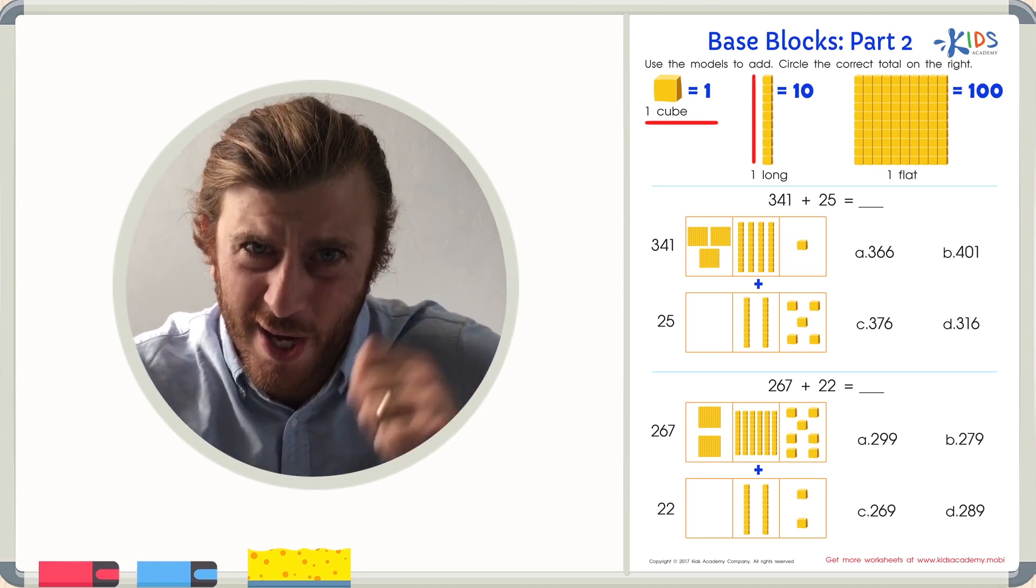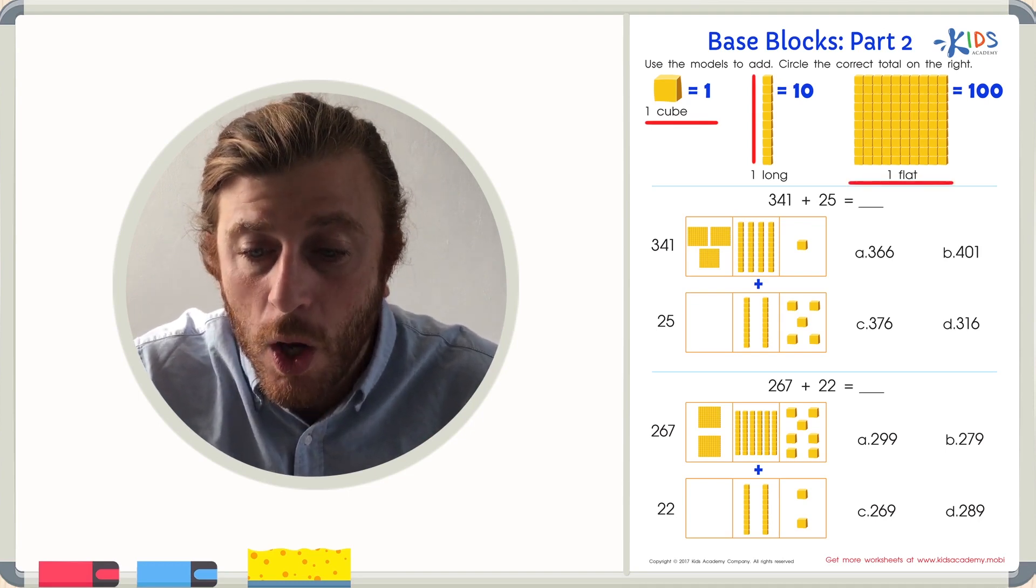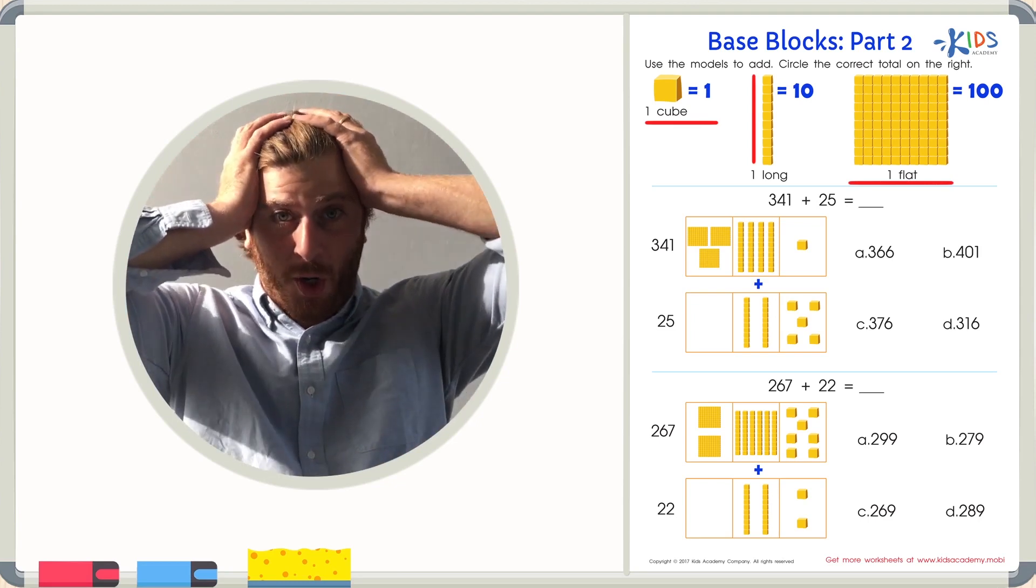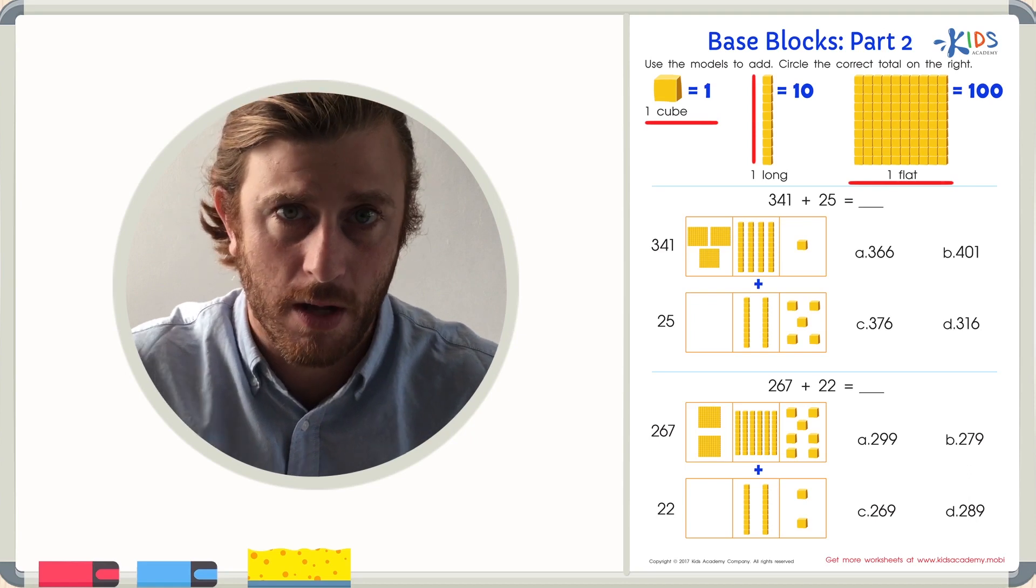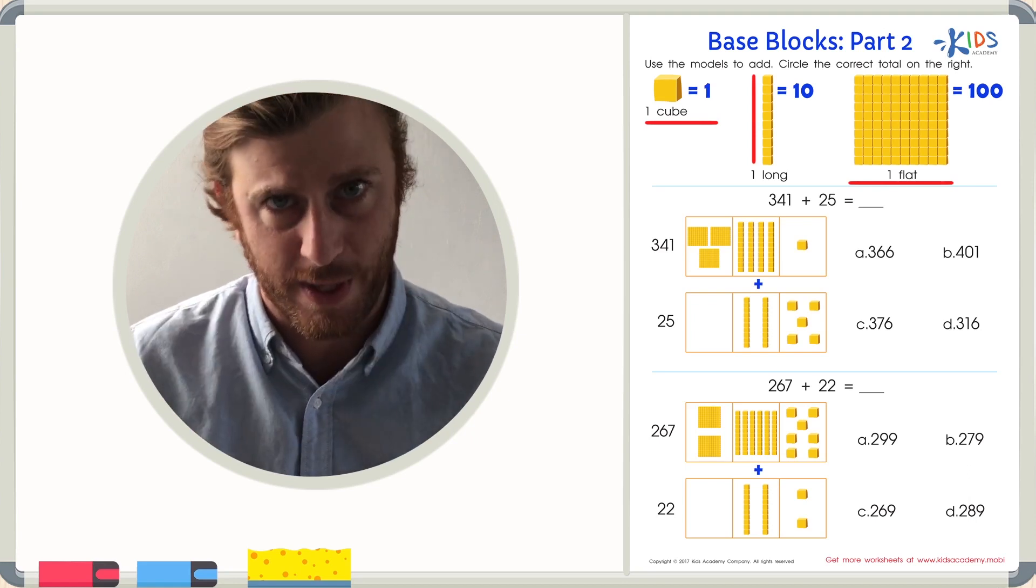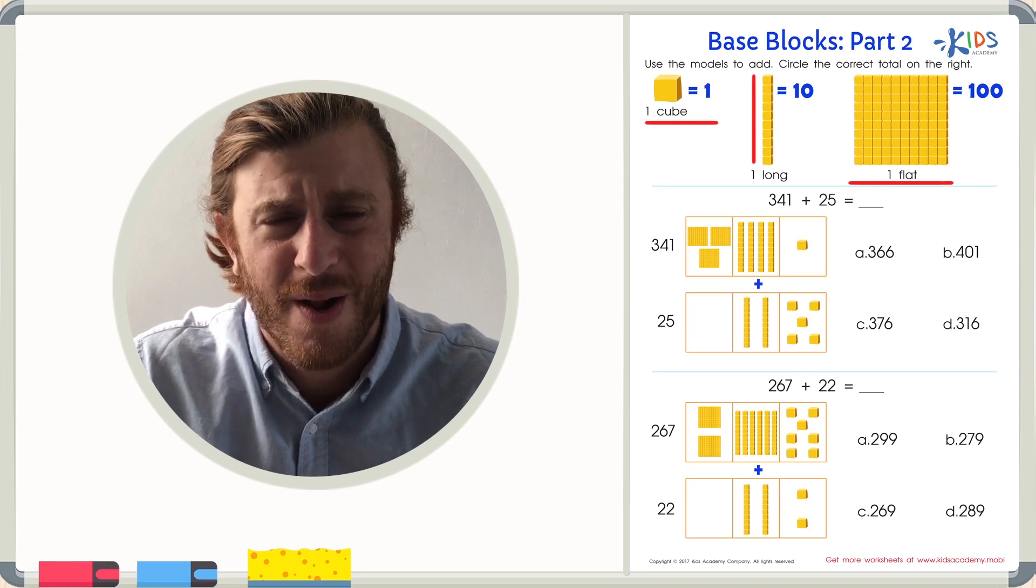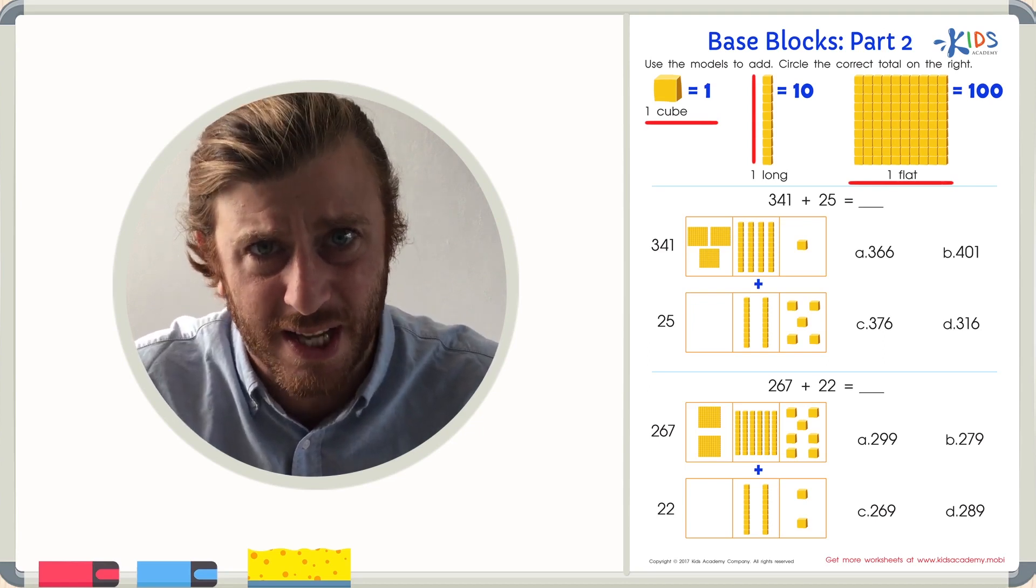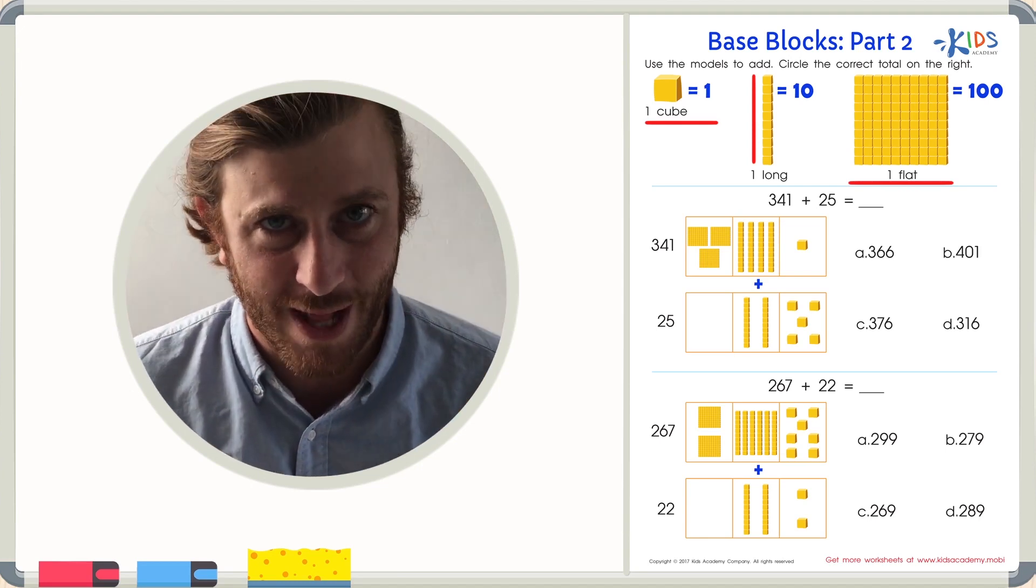A long usually represents ten and we usually put longs in the tens place. Remember that for later. Then we have one flat. One flat has 100 cubes in it. We can also count using longs. There are 10 longs inside the flat. Just trust me guys. There's 100 cubes inside the flat.